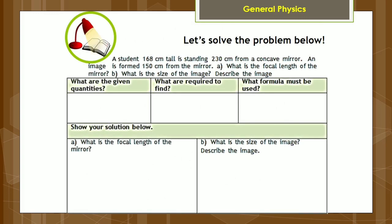In order to make use of the mirror equation, let us solve the problem below. A student 168 centimeters tall is standing 230 centimeters from a concave mirror. An image is formed 150 centimeters from the mirror. What is the focal length of the mirror? What is the size of the image? Describe the image. For the solution, first write the given and the required quantities.